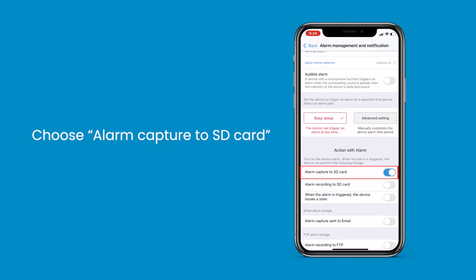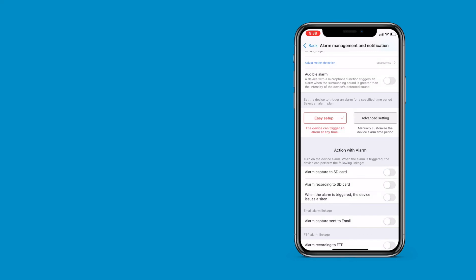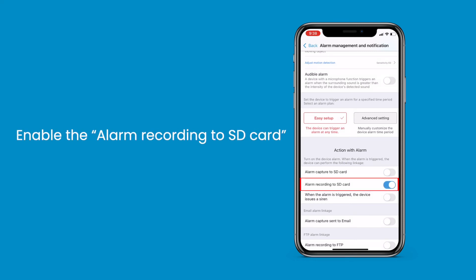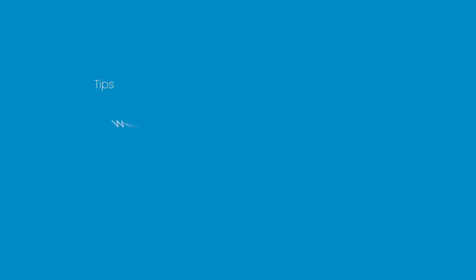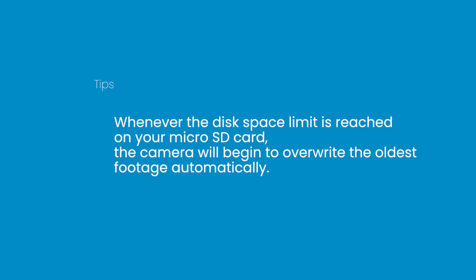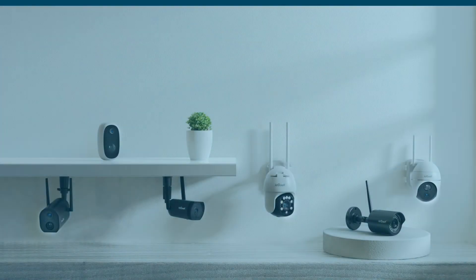Choose Alarm Capture to SD Card to receive any event footage. In addition, enable Alarm Recording to SD Card to have 24/7 recording captured. Tips: 24/7 recording captures everything. Whenever the disk space limit is reached on your micro SD card, the camera will begin to overwrite the oldest footage automatically.